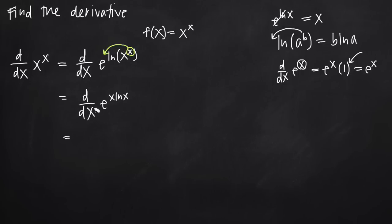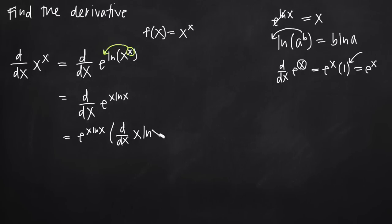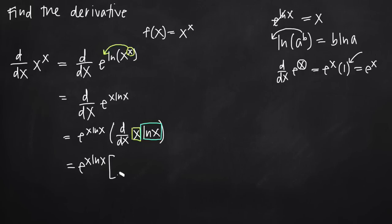So we're going to get e to the x natural log of x, and now we have to multiply by the derivative with respect to x of the inside function x natural log of x. To take that derivative we need to use the product rule, because we have two functions multiplied together — x being one of them and natural log of x being the other. So we apply product rule here.